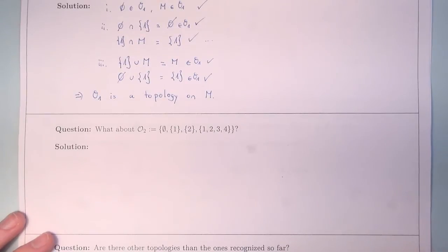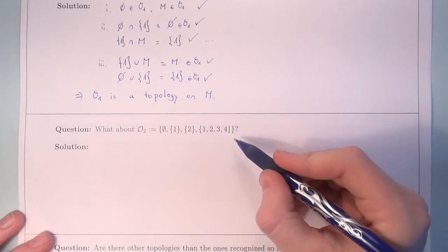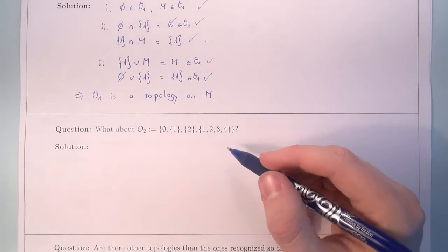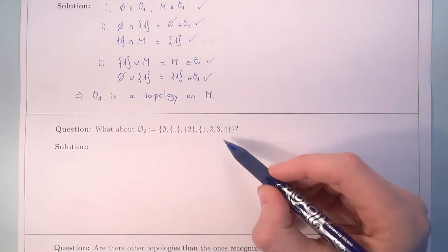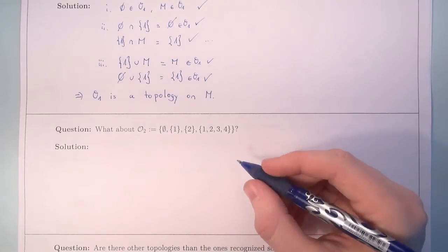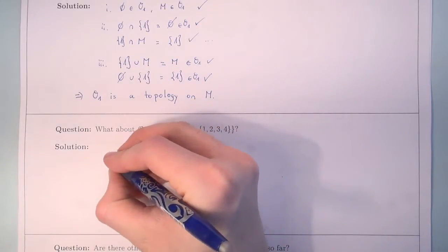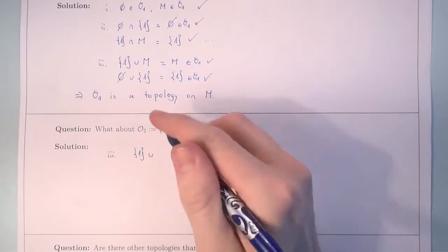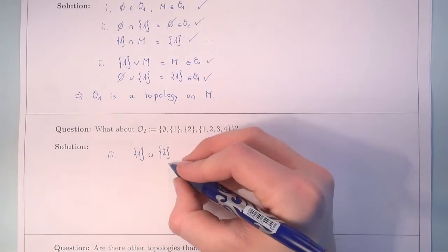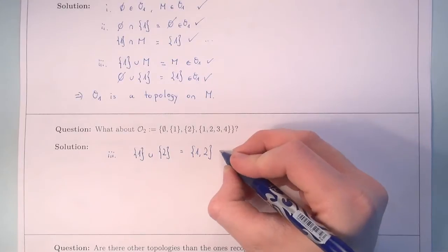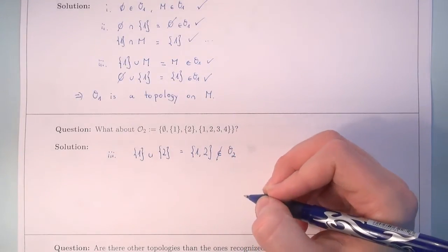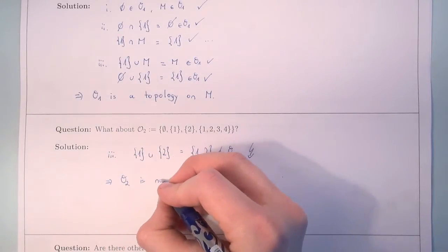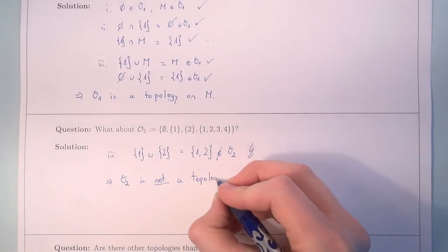Now the question is whether topology O2 is also a topology. We can again check: the empty set and M are both in O2, and all intersections of elements in O2 are again elements of O2, so the second criterion is fulfilled. However, if we check criterion 3, we see that the union of the set {1} and the set {2} gives the set {1, 2}, which is not in O2. Thus we have a violation of criterion 3, and O2 is not a topology on M.